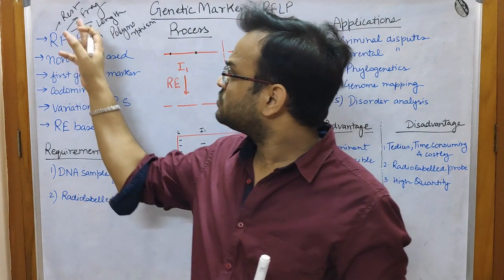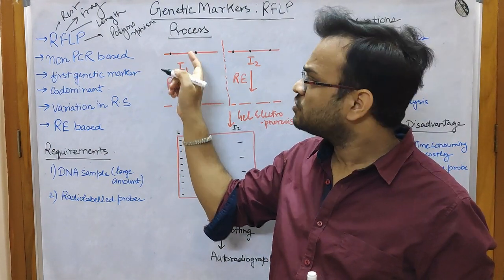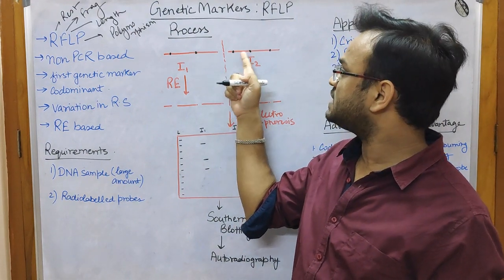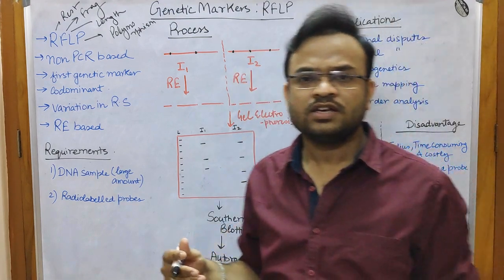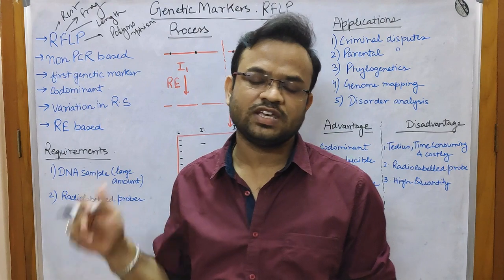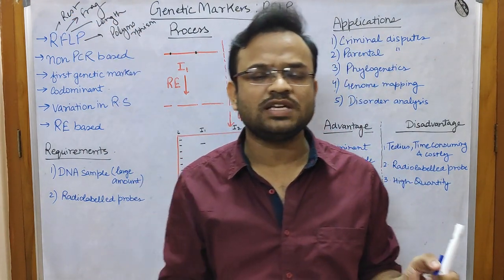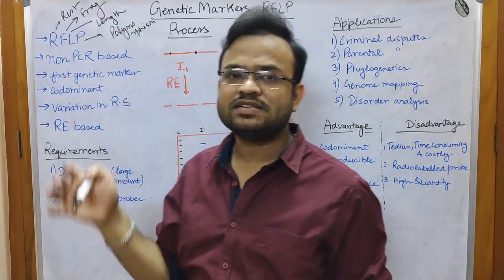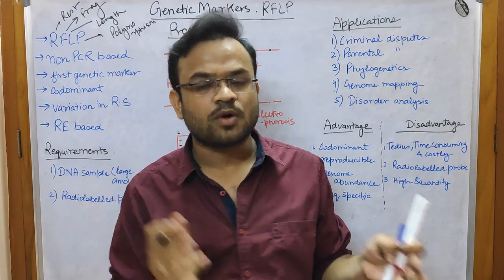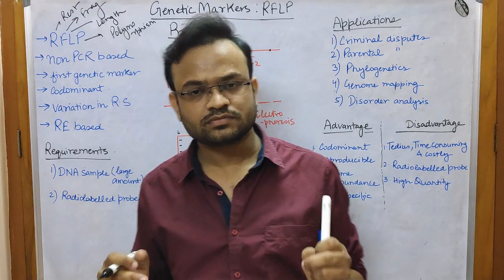Fragment refers to the pieces produced when a restriction enzyme cuts at specific places. For example, if the enzyme cuts at two places, we get three regions; if it cuts at three places, we get four regions. These regions are of different lengths. Polymorphism means differences — there are different fragments of different lengths obtained after using the restriction enzyme to cut the DNA of two given organisms.